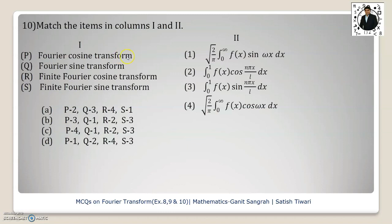Fourier cosine transform formula will be given by option number 4: √(2/π) ∫₀^∞ f(x)cos(ωx)dx. So P matches with 4. We have option c only here where P matches with 4, so this will be correct.